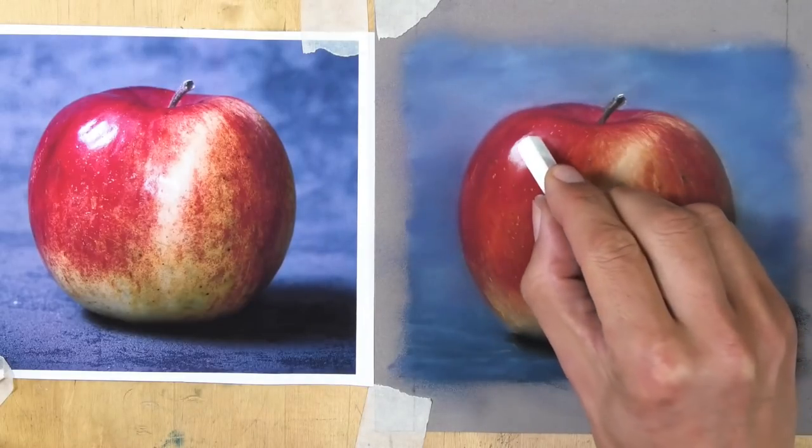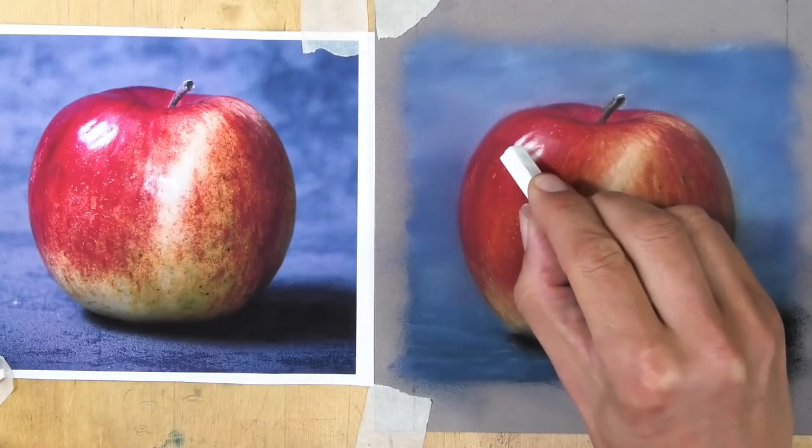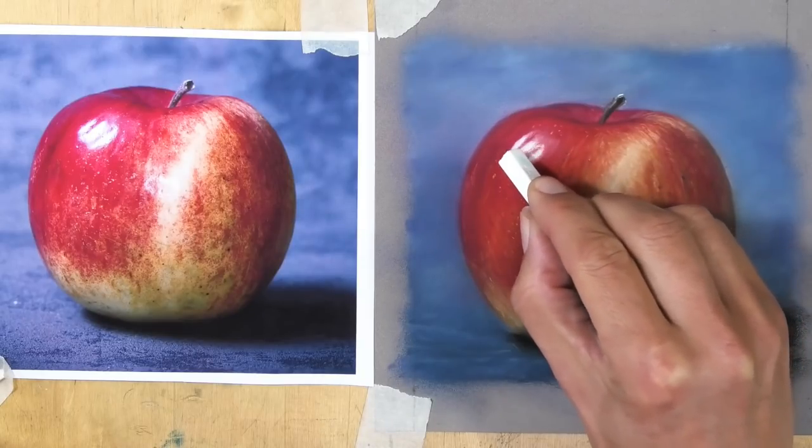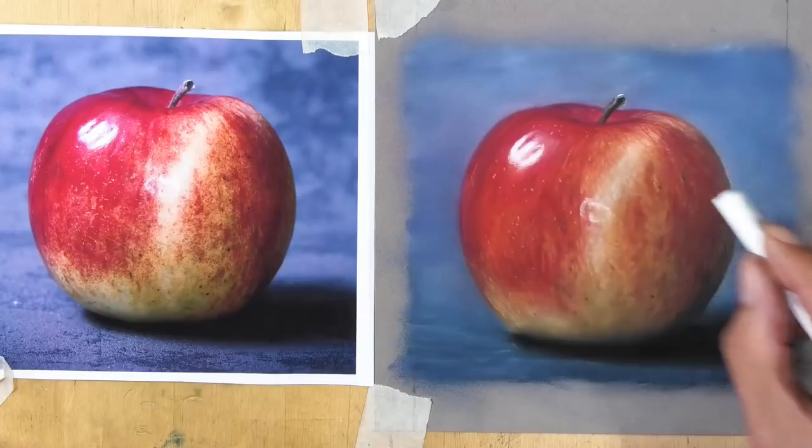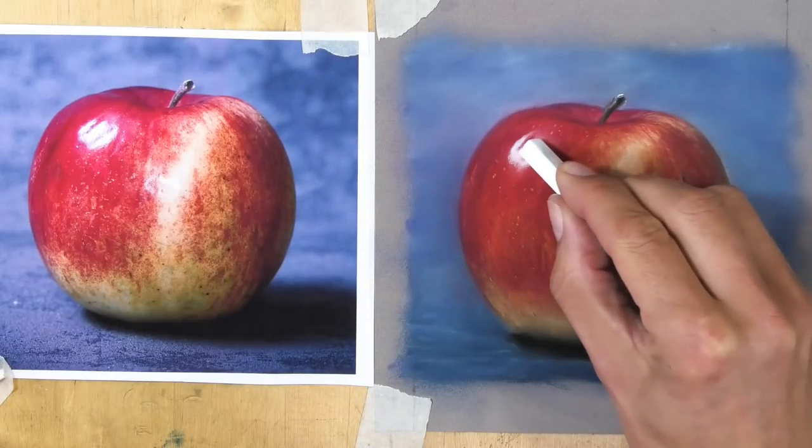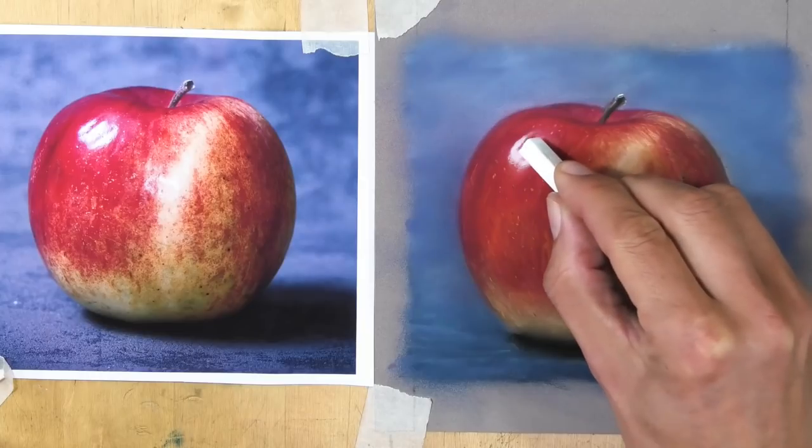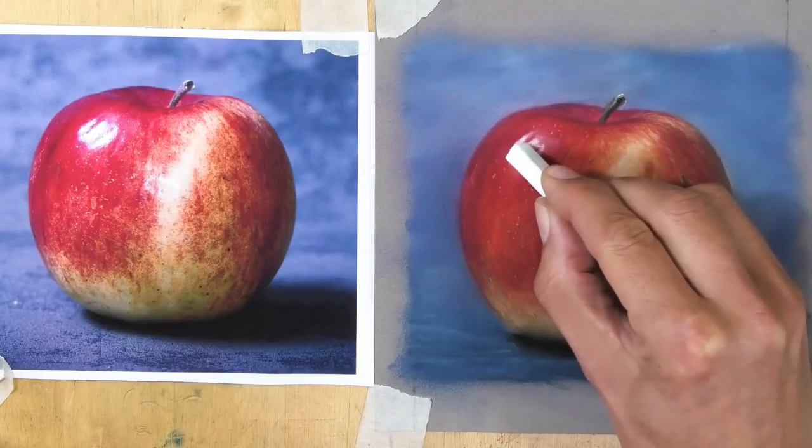Just increasing the brightness on the highlight. When I want something very, very punchy, that's when I'm going towards my sticks and softer pastels—they'll give you a more punchy white and highlight than you'll get with any of the pencils.